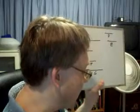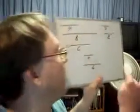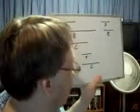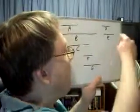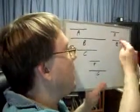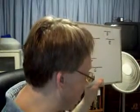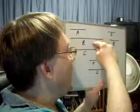As many times then as E measures B, so many units let there be a G. Therefore G by multiplying E — G times E — makes B. Therefore B is a plane number and E and G are its sides.